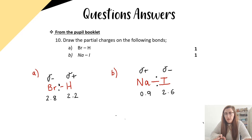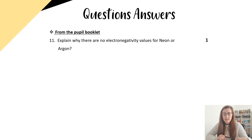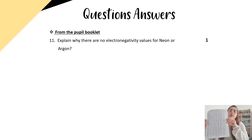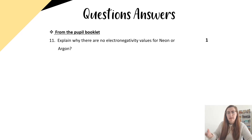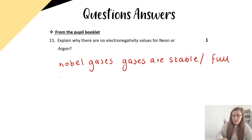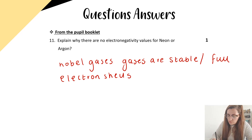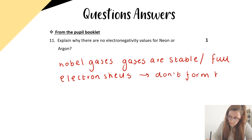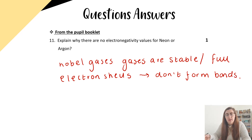For question 11, it asks: explain why there are no electronegativity values for neon or argon. If you look at page 11 in your data booklet, there are no electronegativity values for any of the noble gases. The explanation is simple: the noble gases are stable and have full electron shells, which means they don't form bonds, so there is no electronegativity value data for those elements.